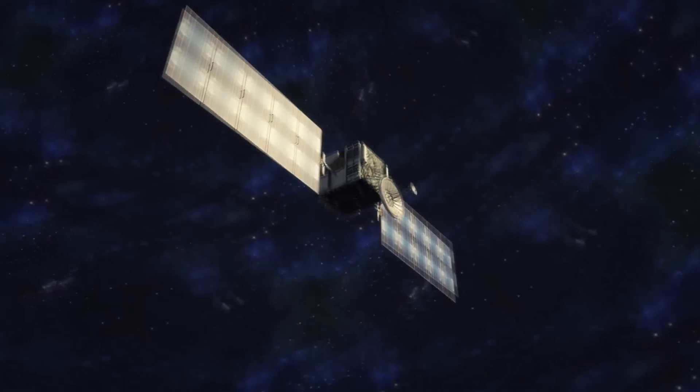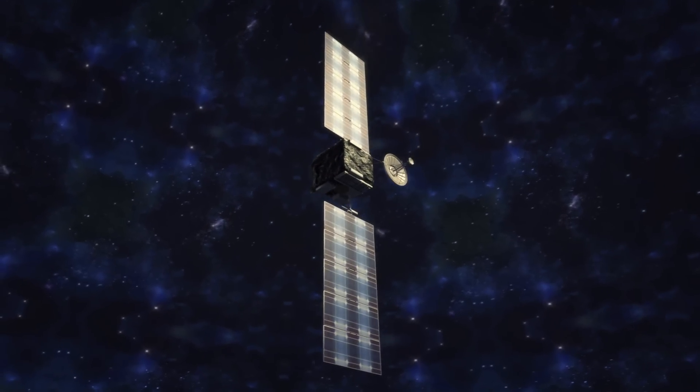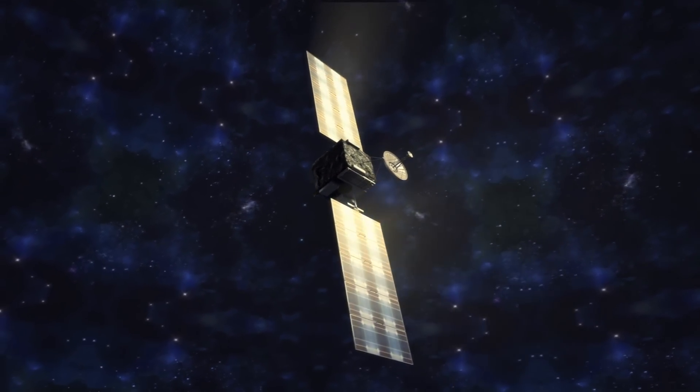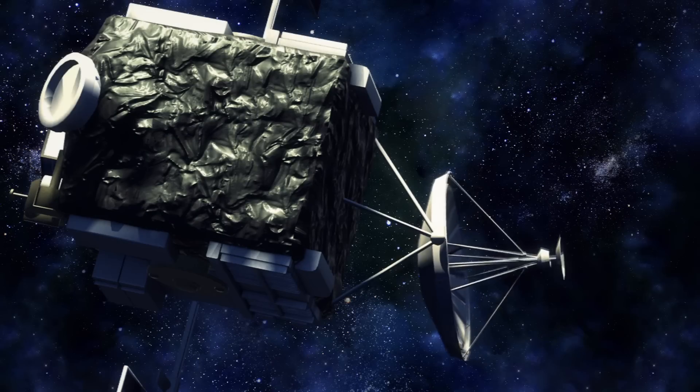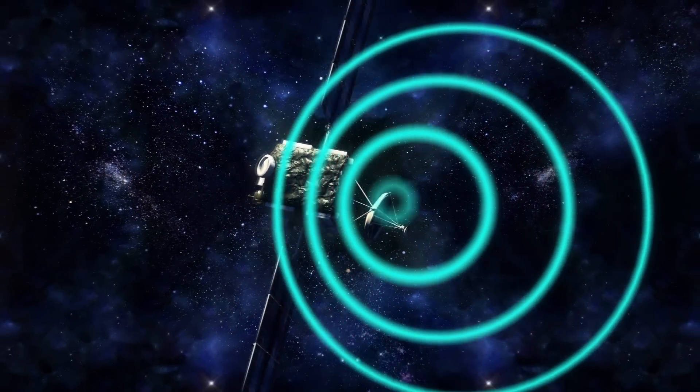The spacecraft will be revived on January 20. The star trackers will be warmed up, and the solar panels will adjust their positions to face the Sun. After determining its altitude, Rosetta will rotate toward Earth and emit signals.